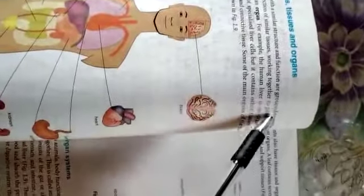Cells with similar structure and function are grouped together to make what? Tissues. Then collection of similar tissues working together to form what? Organ. And you see these are different organs shown here to you.